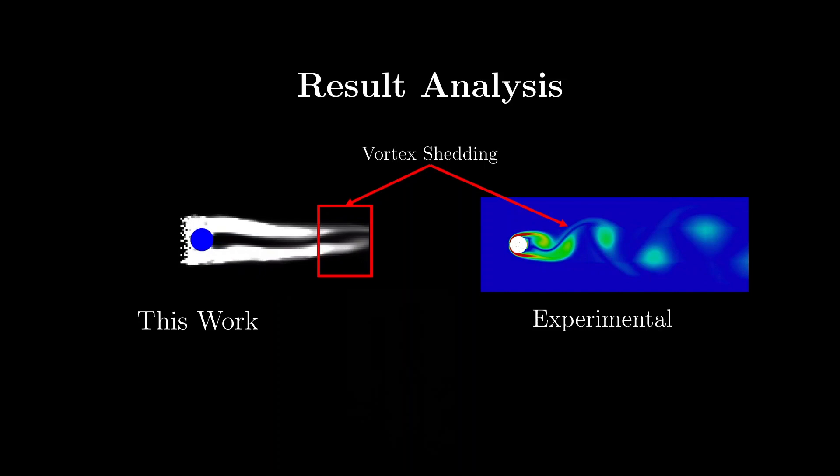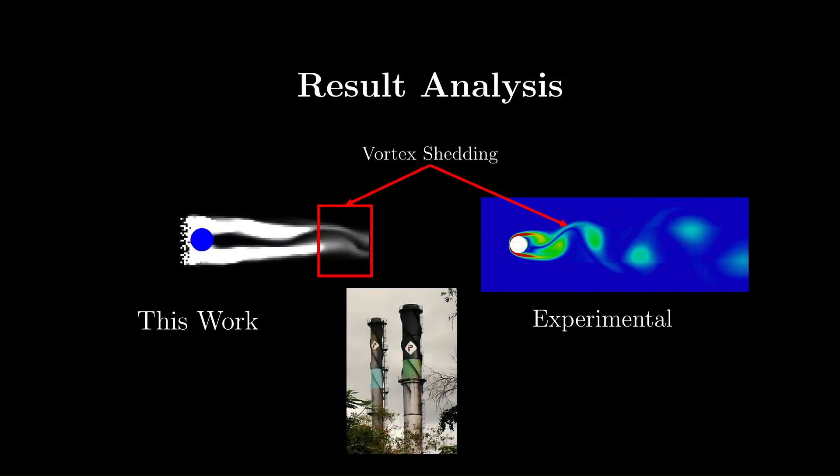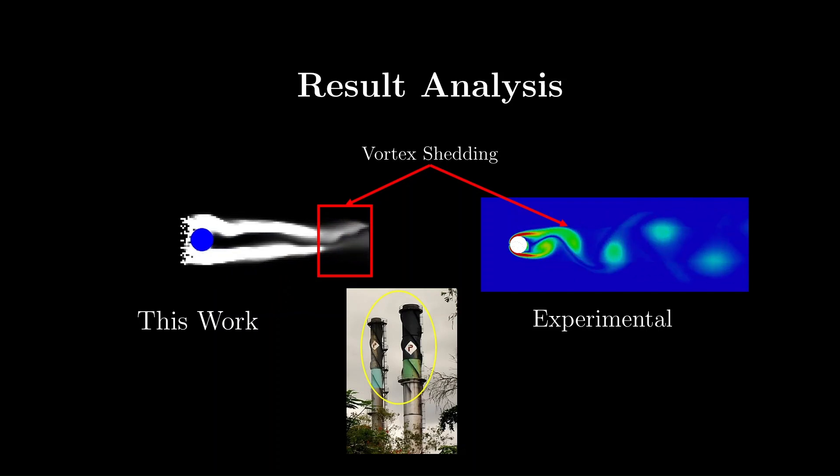For example, you may have noticed unusual spirals or helical patterns on industrial chimneys. These are not decorative elements, but are intentionally designed to disrupt the formation of vortices as wind flows past the cylindrical structures. Without these features, the repeated vortex shedding could induce oscillations at the chimney's resonant frequency, potentially leading to structural failure and collapse.